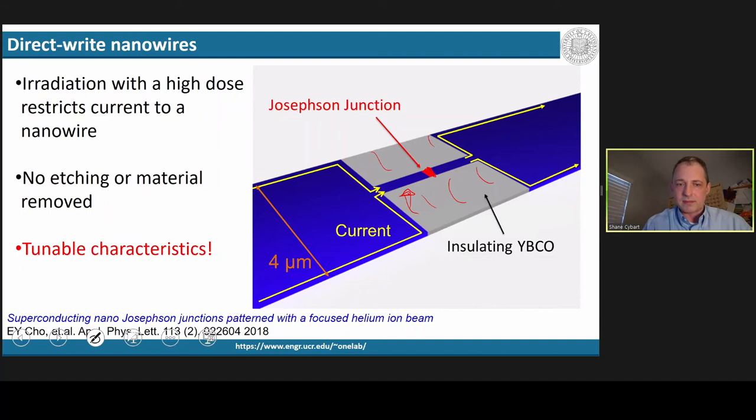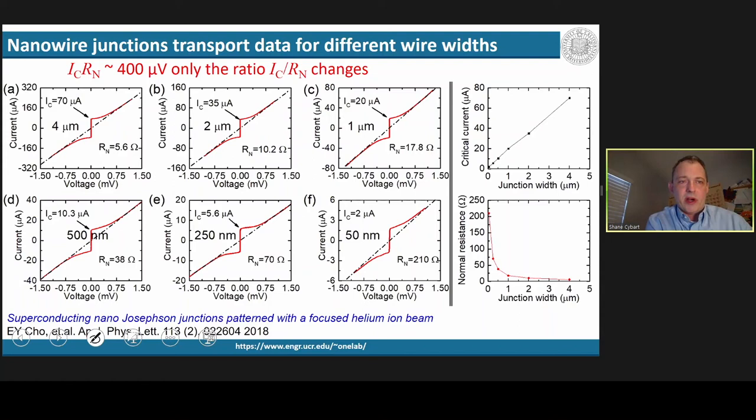This slide demonstrates that. It shows the current voltage characteristics for a four-micron device, two-micron, one-micron, all the way down to 50 nanometers. So we're scaling that size of that junction all the way down to 50 nanometers. Over here we can plot how the critical current is changing of the device as we scale down. And it's perfectly linear with the dimension, ensuring us that we are scaling it down like we think we are.